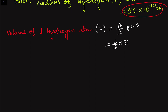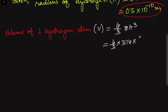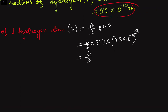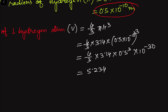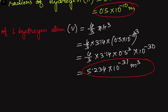Therefore, the volume of one hydrogen atom is 4 by 3 into pi (3.14) into r cube, where r is 0.5 into 10 to the power minus 10. This gives 4 by 3 into 3.14 into (0.5) cube into 10 to the power minus 30. Multiplying these values, we get 5.234 into 10 to the power minus 31 meter cube. The unit is meter cube because r was expressed in meters and we cubed it.